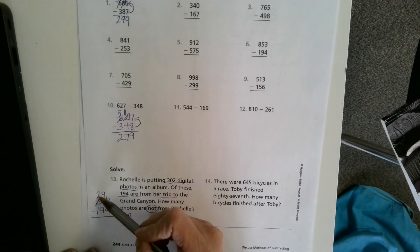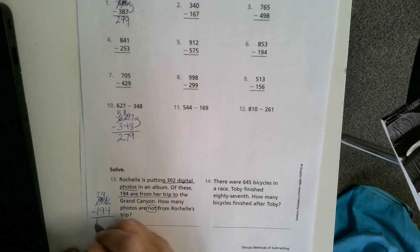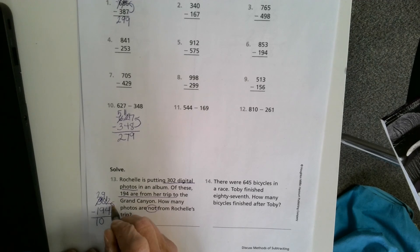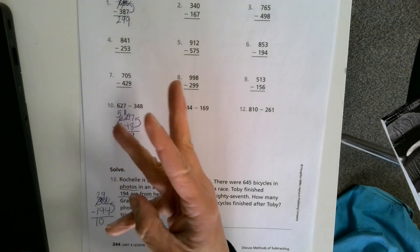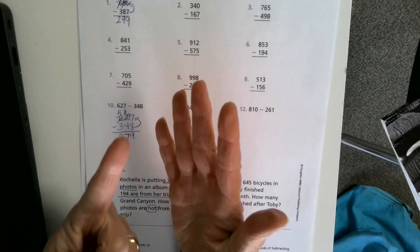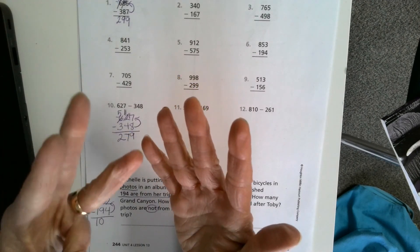So I'm going to start in the hundreds. 2 minus 1 is 1. 9 minus 9 is 0. And 12 minus 4? I'm going to count up. Put 4 in my head. 5, 6, 7, 8, 9, 10, 11, 12. I got 8.